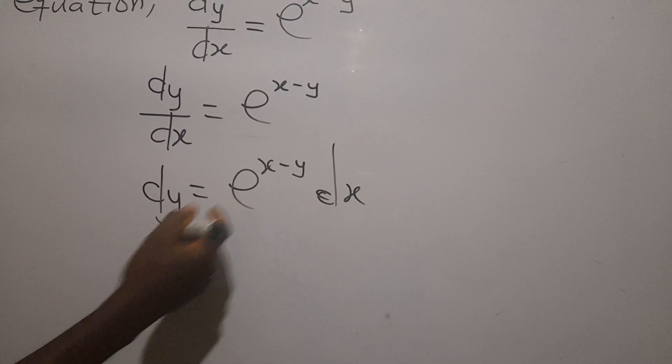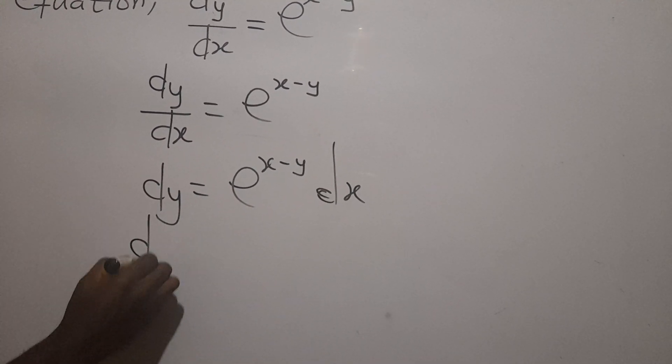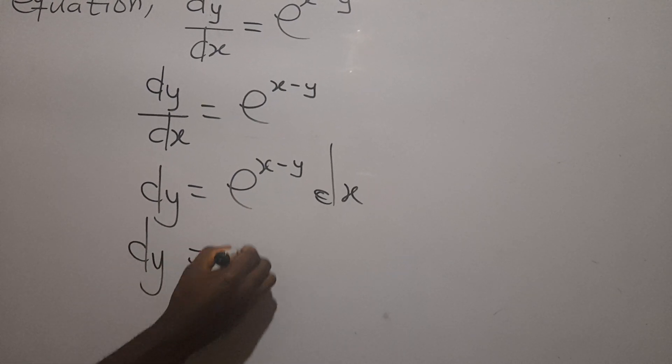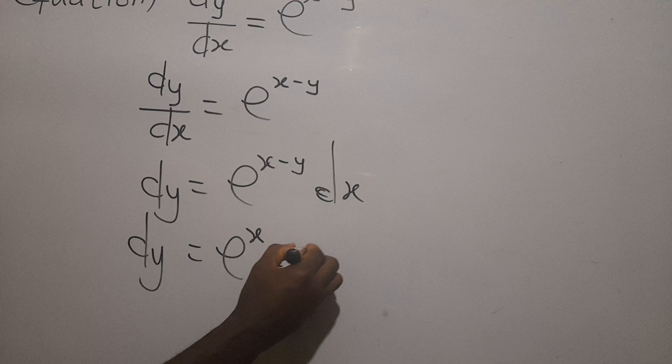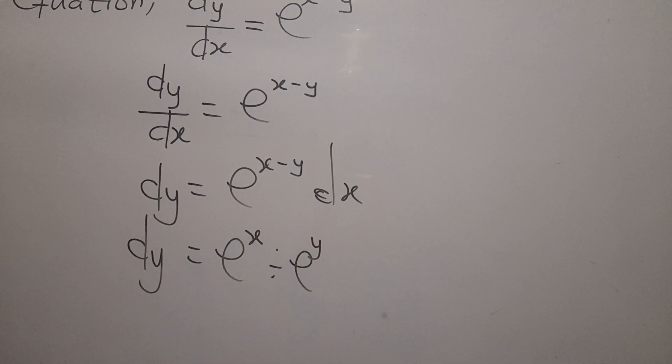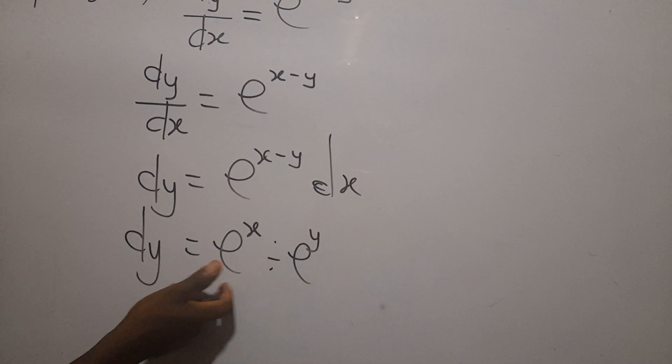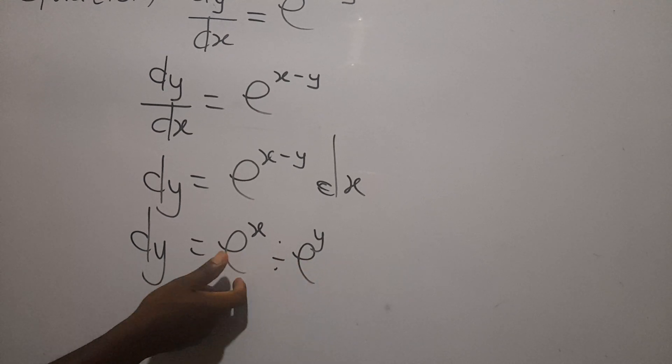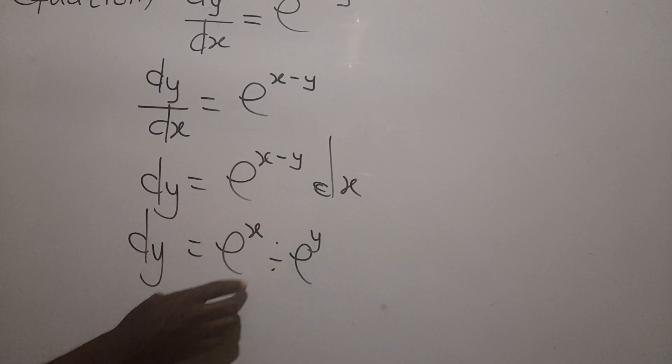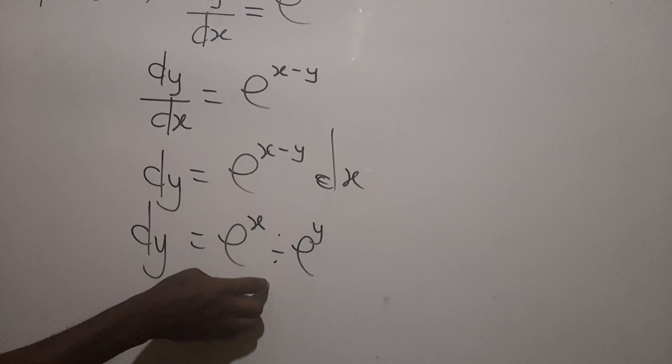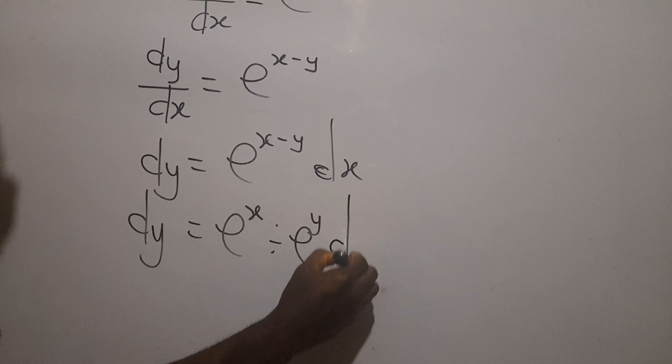So we can rewrite this using the indices and say dy equals e exponent x divided by e exponent y. Remember indices is saying that when two indices are dividing with the same base then we will just repeat the base and subtract the exponents. So that's what we did.